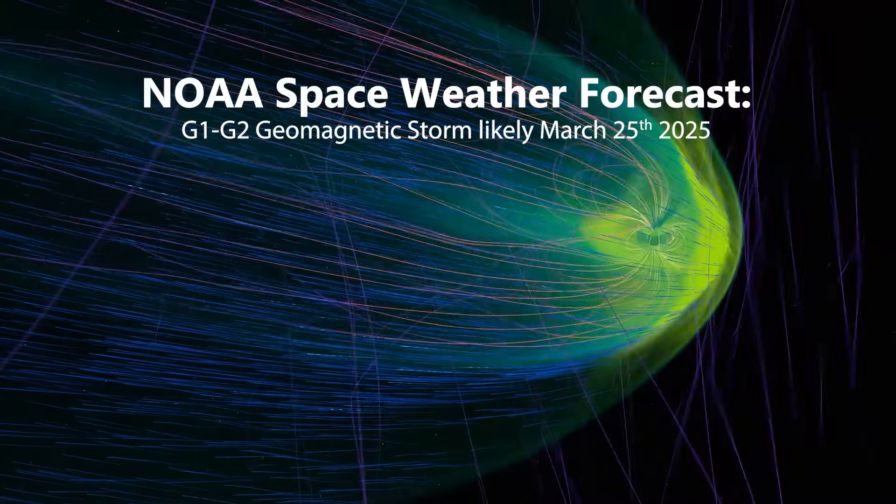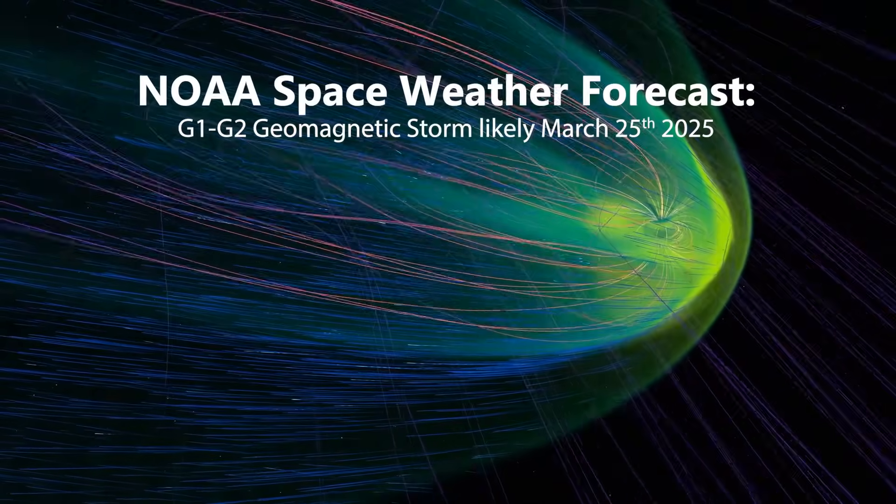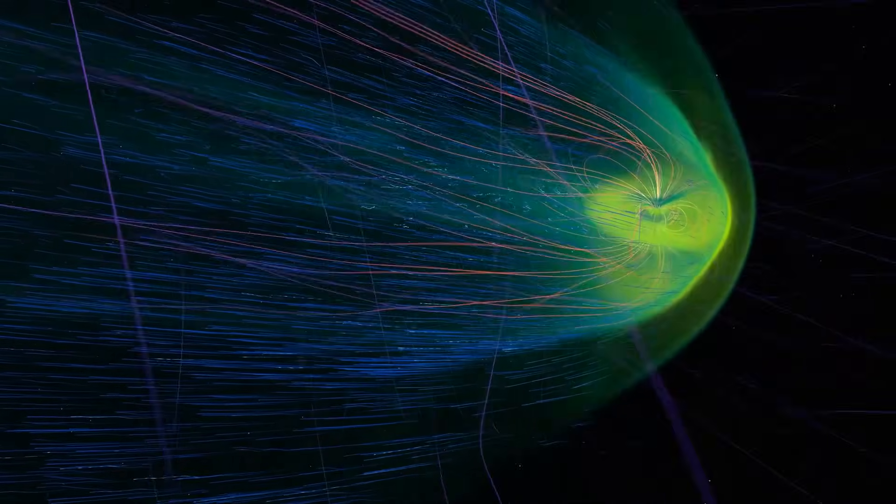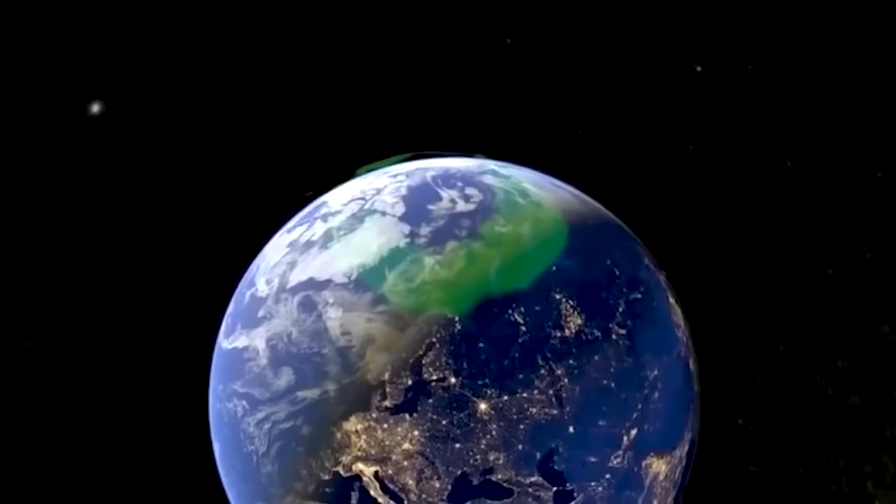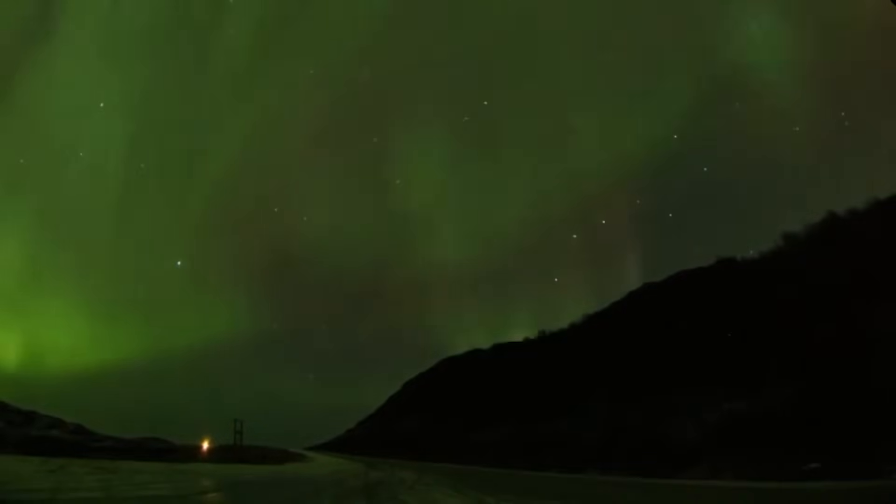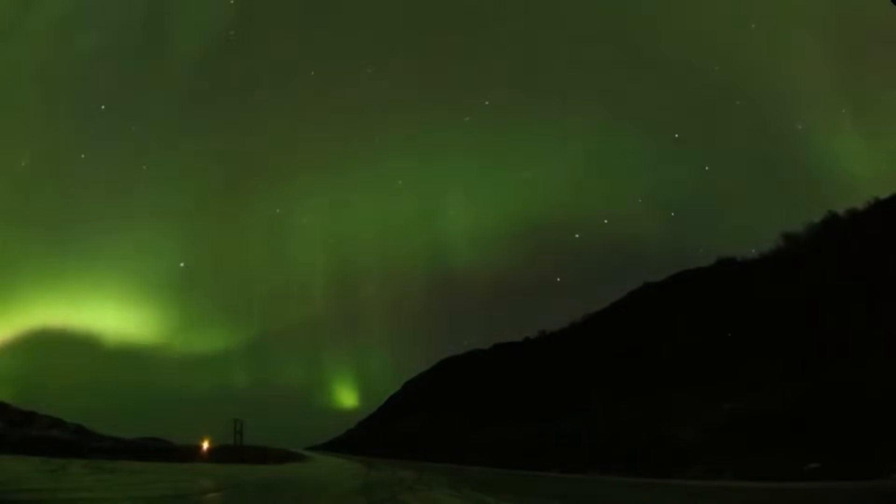NOAA is forecasting that this will trigger a G1 to G2 geomagnetic storm. The scale rating goes from 1 to 5, 5 being the most severe, and so this is expected to increase geomagnetic volatility across the planet, cause there to be more aurora, and there are connections between coronal hole high-speed streams and various geophysical events across the planet.